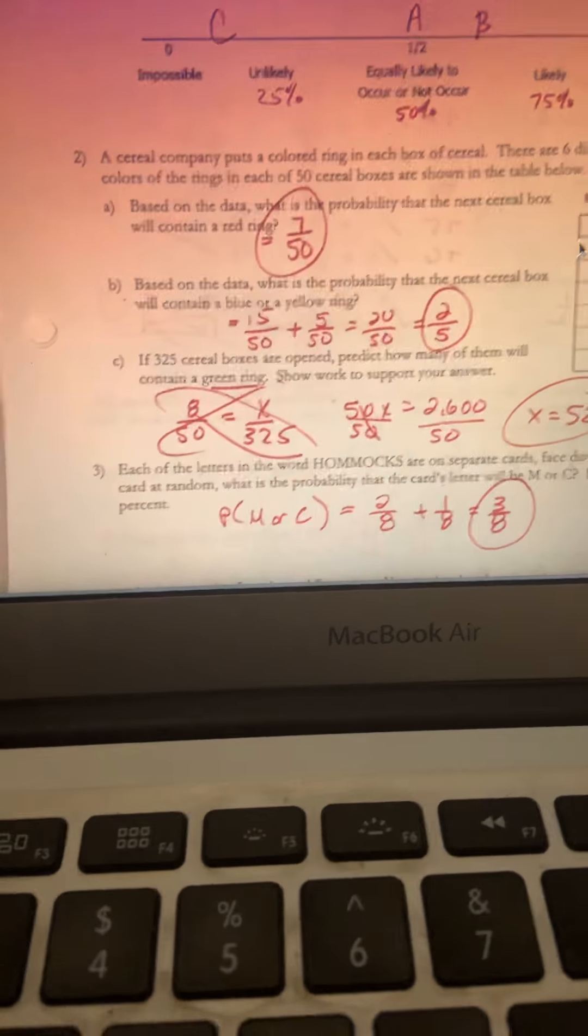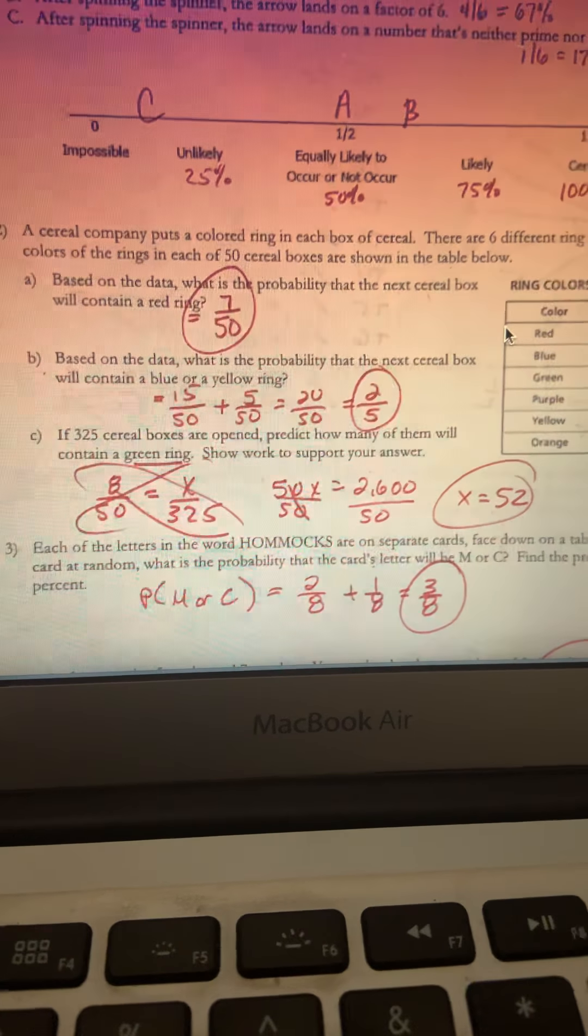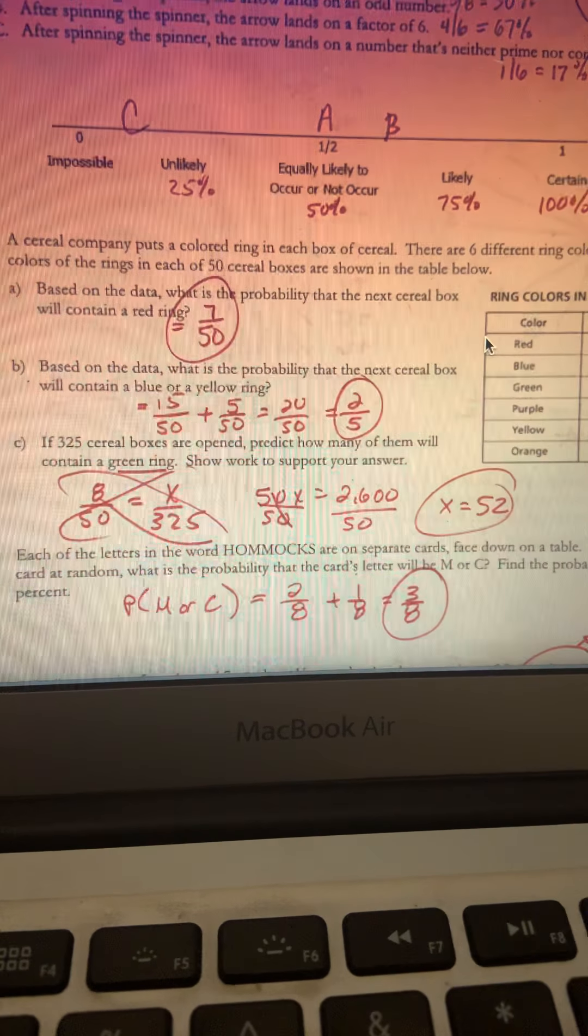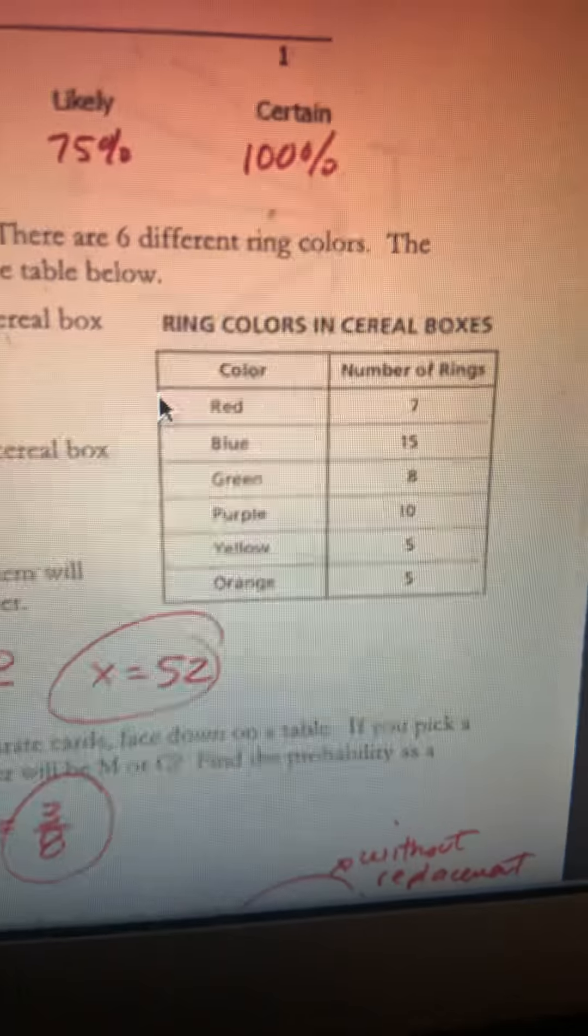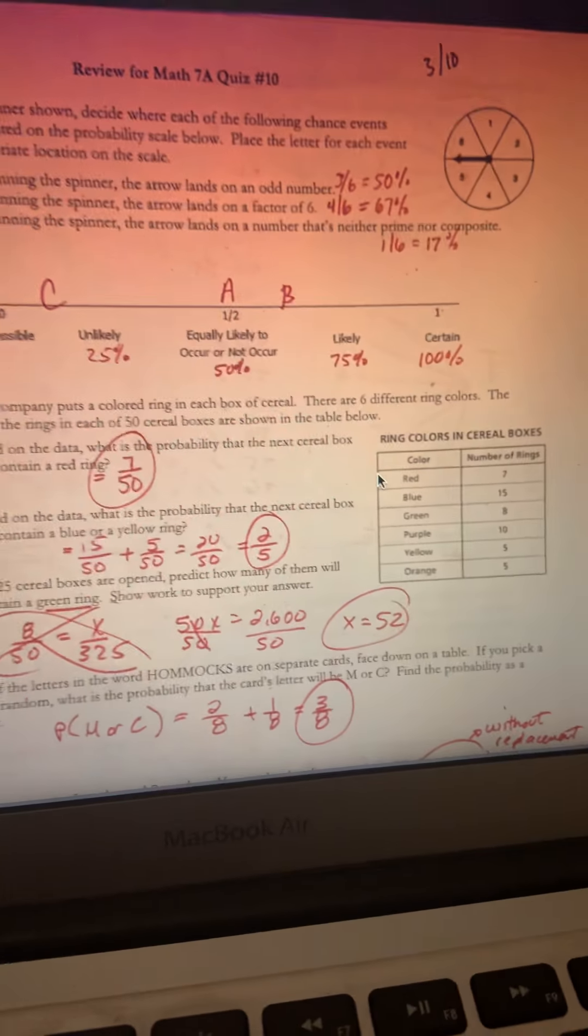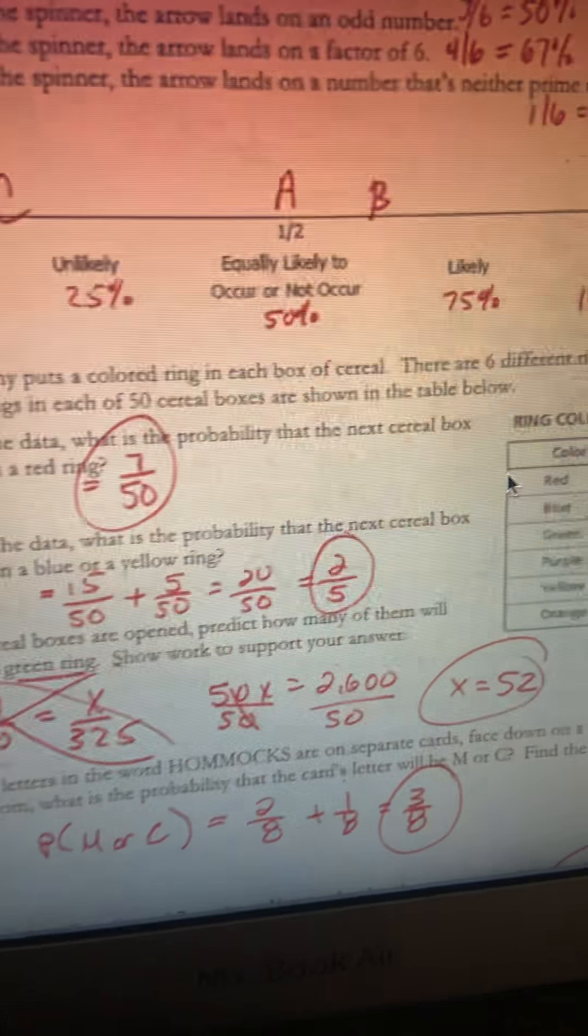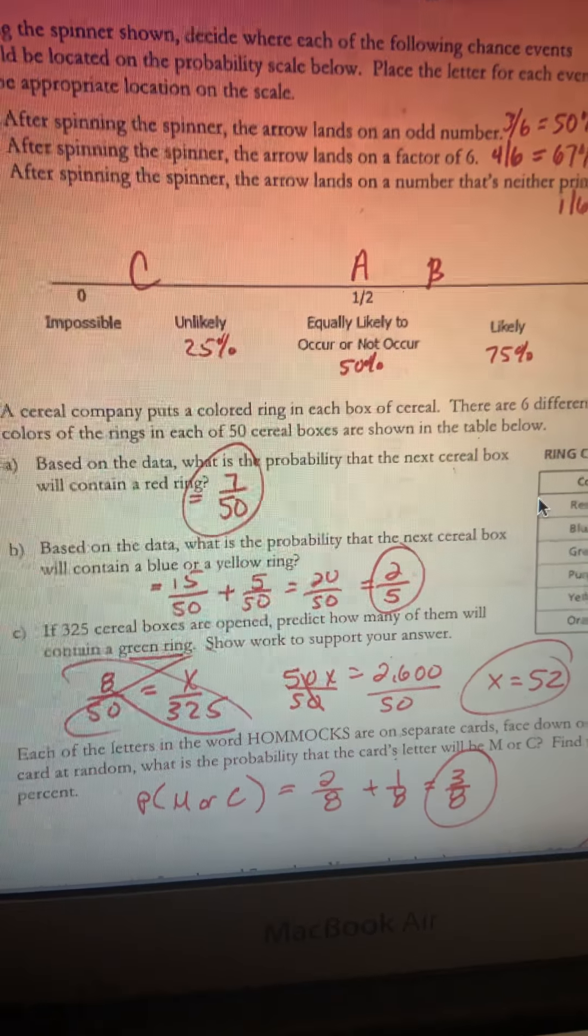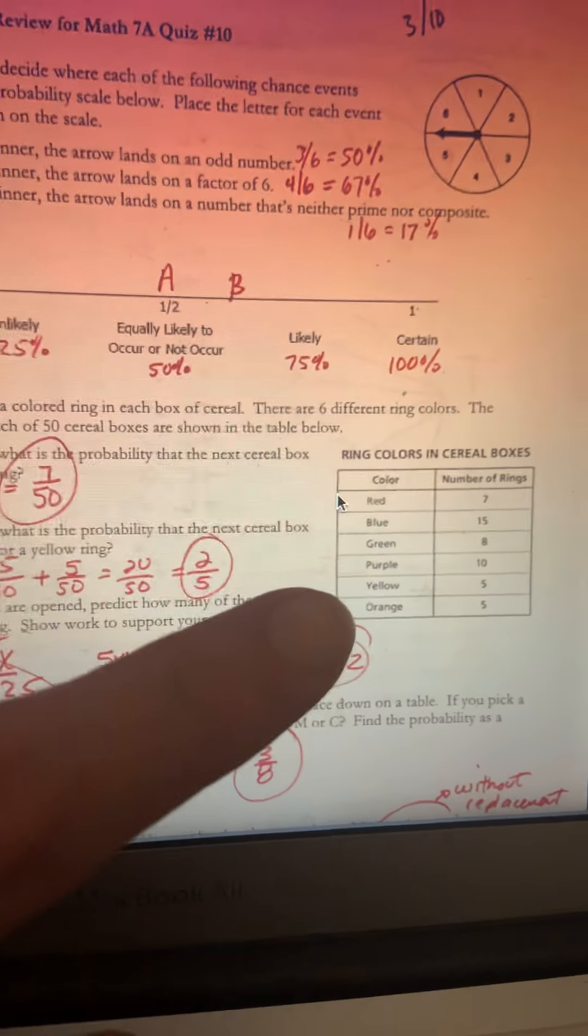A cereal company puts a colored ring in each box of cereal. The colors are listed and the number of each color is in that table. There are a total of 50 cereal boxes. The first one is the probability of red. Red is 7 out of 50.